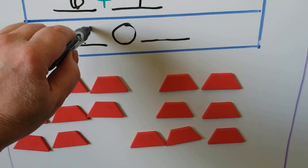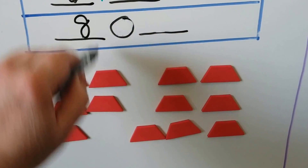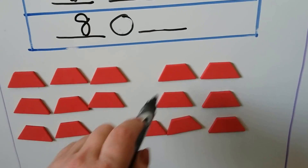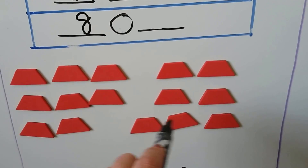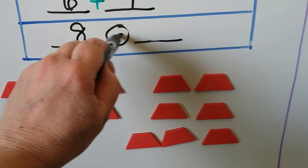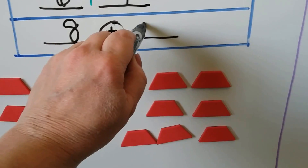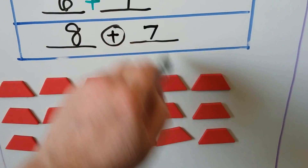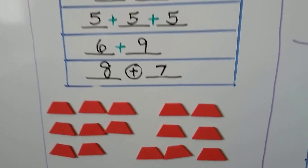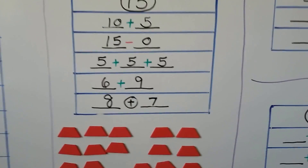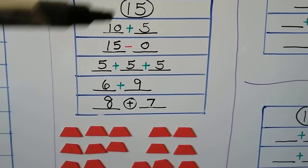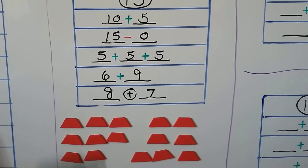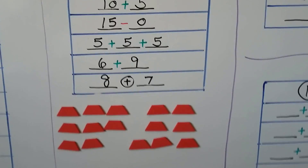We could count out 8 counters plus 7 counters — 8 plus 7 makes 15. So those are just some of the ways to make 15 with addition or subtraction.